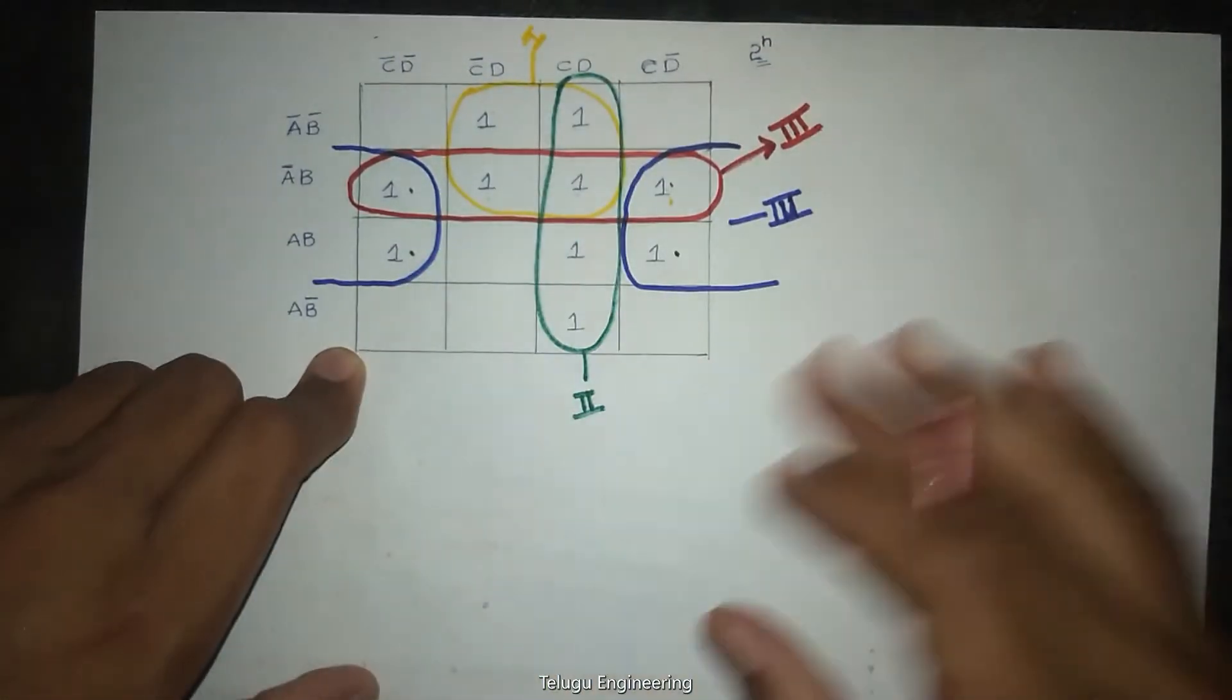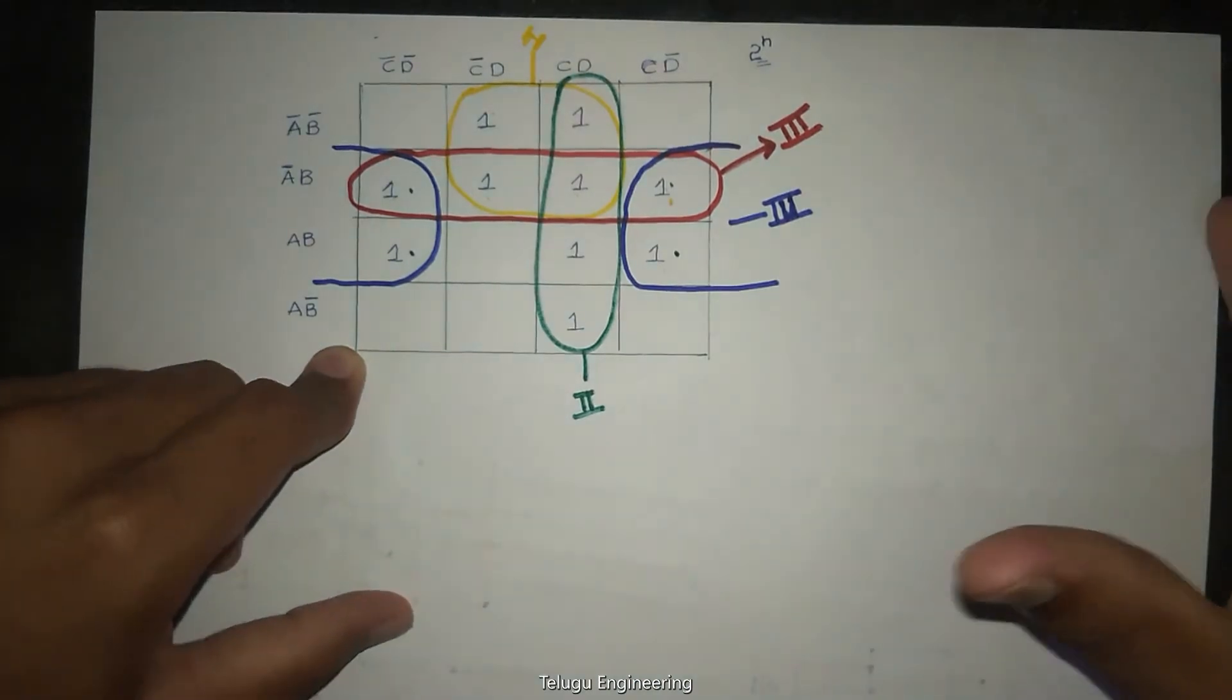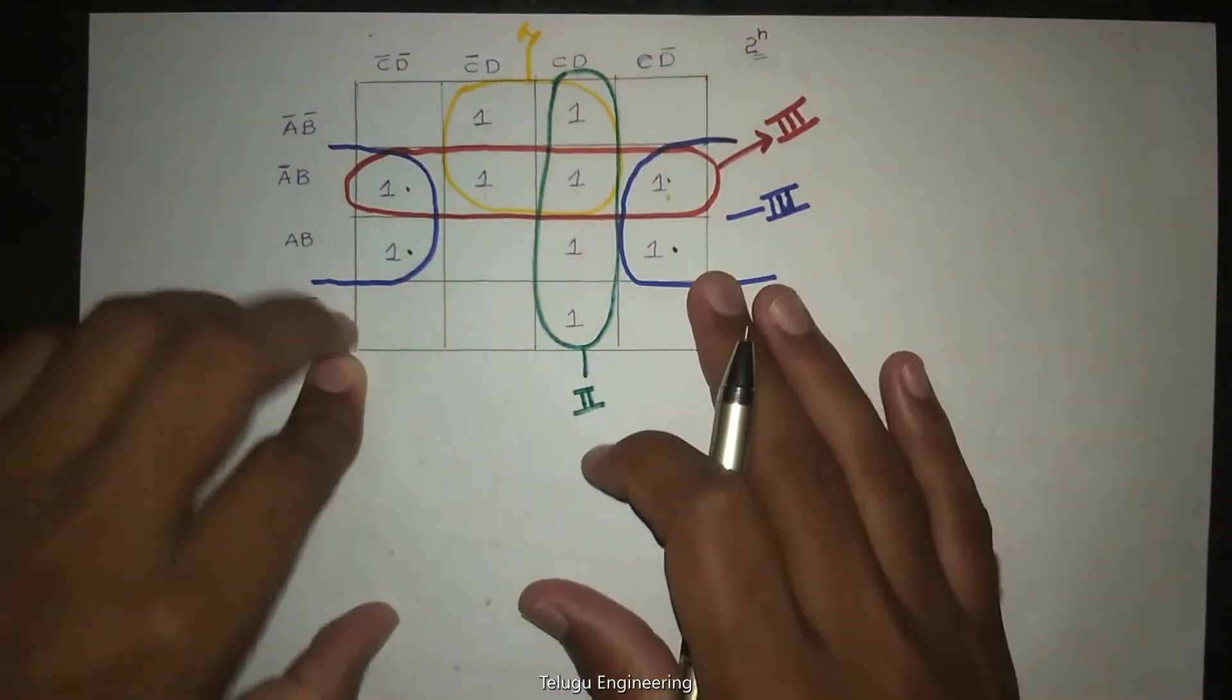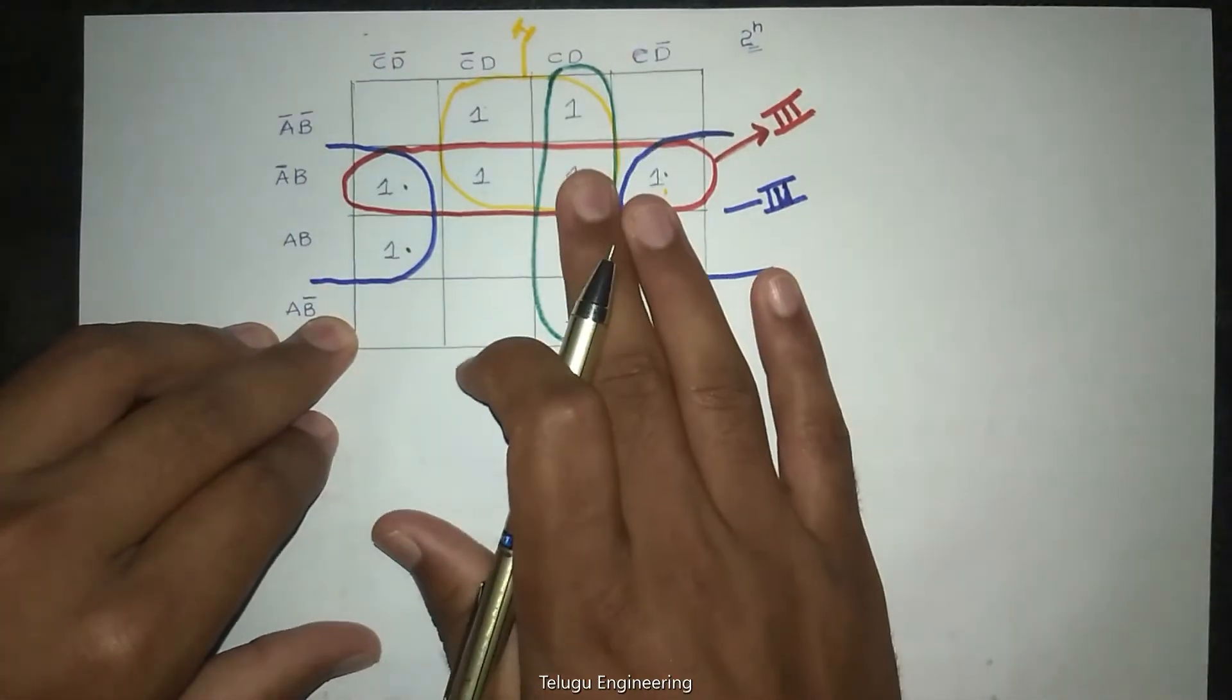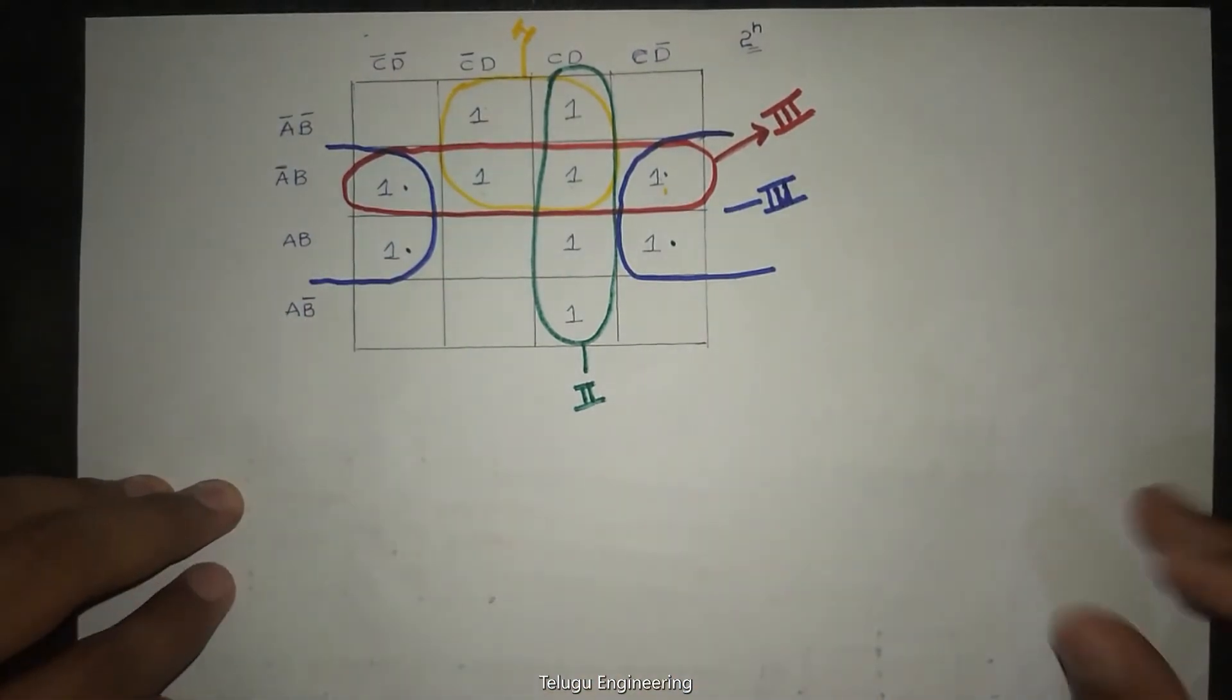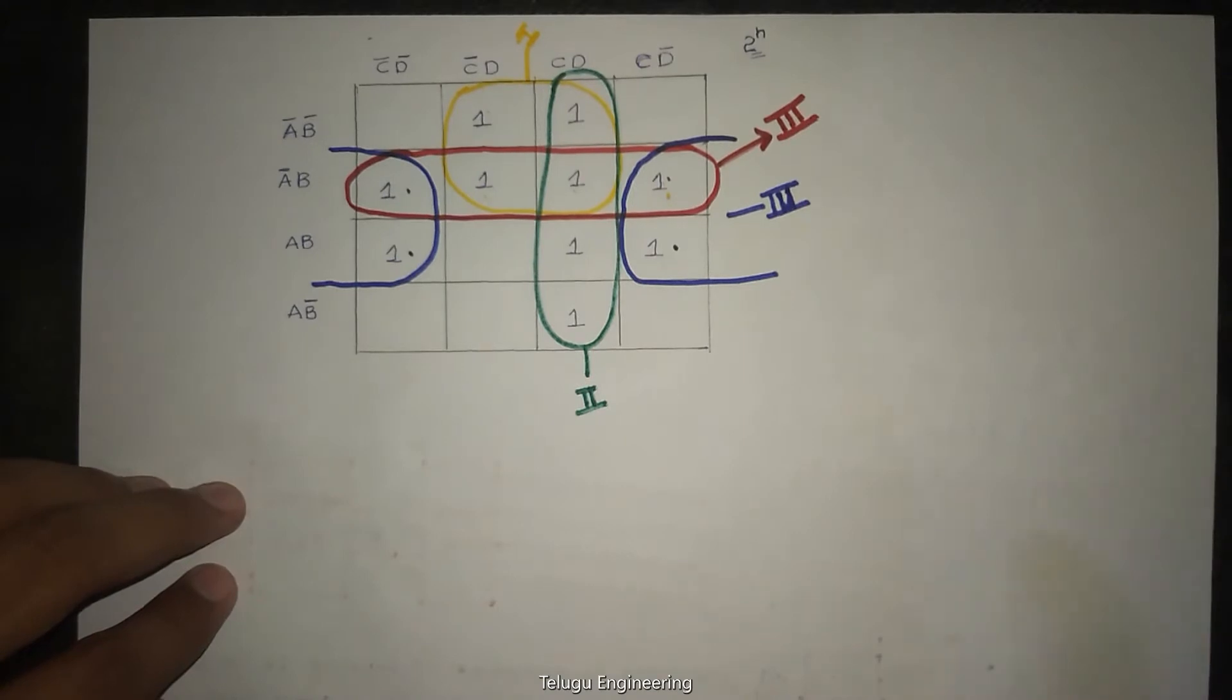This will be the fourth group, and this is the third group. So we will be successful with the priority. In this way we will group.